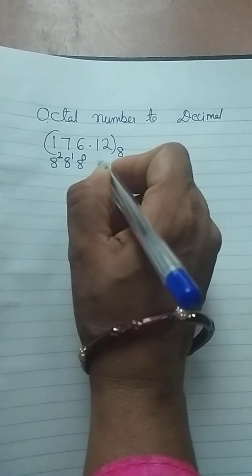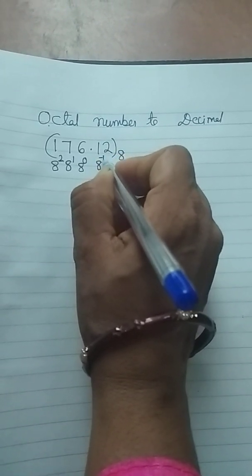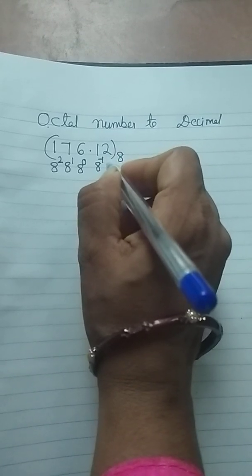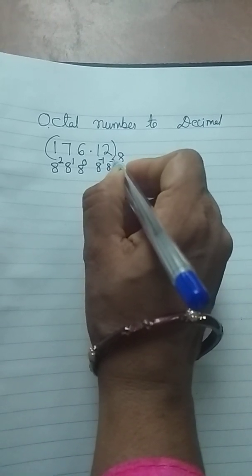And after decimal, we have to multiply 1 into 8 to the power of minus 1, 2 into 8 to the power of minus 2.